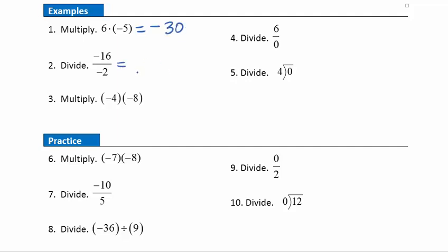Example 2: dividing negative 16 by negative 2. Same signs, so we're going to get a positive answer. I can write that positive sign or just leave it blank — either way it indicates positive. Then focusing on the division, 16 divided by 2 is 8.